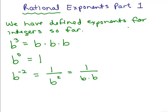So far we've defined exponents for integers. For instance, b cubed means b times b times b. b to the 0 equals 1. b to the negative 2 means 1 over b squared, which is 1 over b times b. All of these are in my videos on exponents, and I have a lot on those.